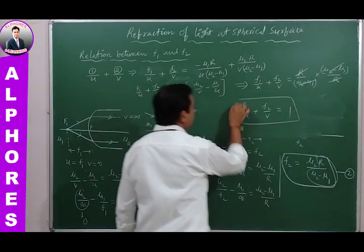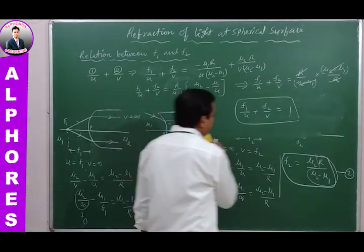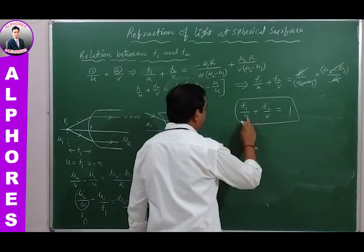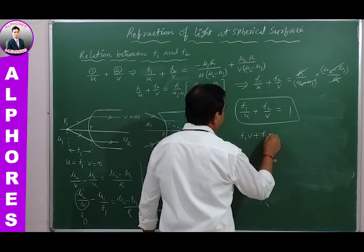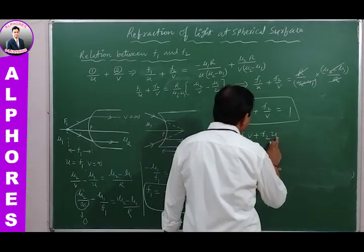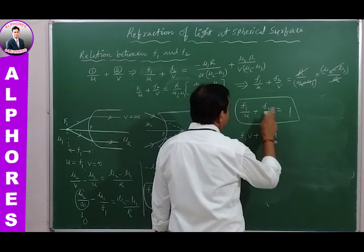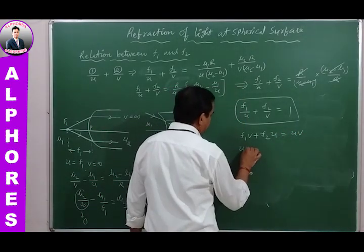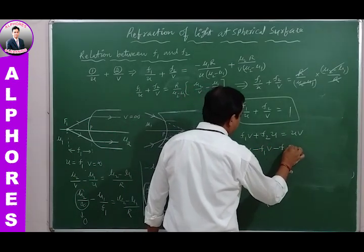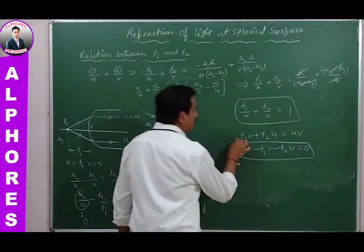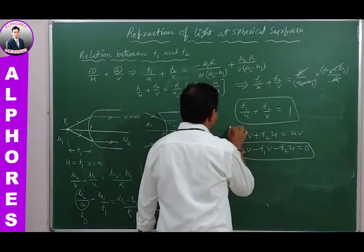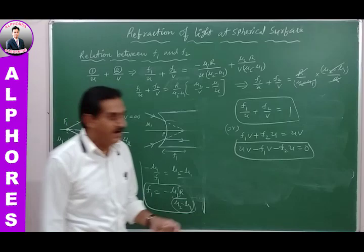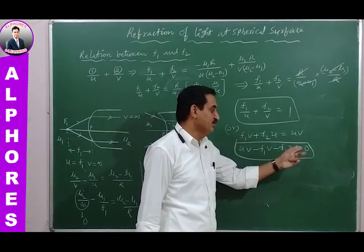This relation F₁/U + F₂/V = 1 can also be rewritten as UV − F₁V − F₂U = 0. This equation gives the relation between F₁ and F₂, while also relating the object distance and image distance.